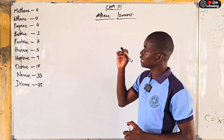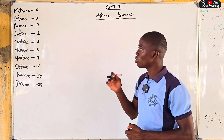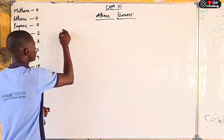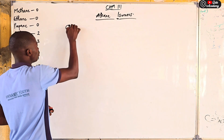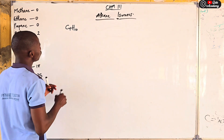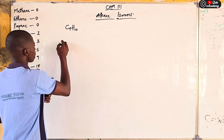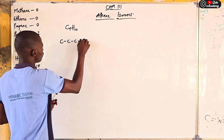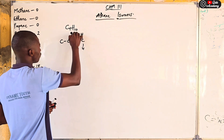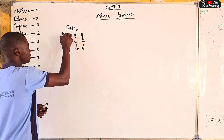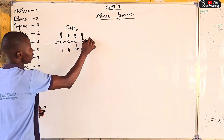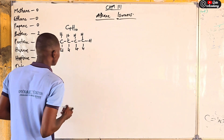Let's try butane first. Butane has the molecular formula C4H10. If you draw the structure: one, two, three, four carbons, and counting the hydrogens: one, two, three, four, five, six, seven, eight, nine, ten — that gives us ten hydrogen atoms.